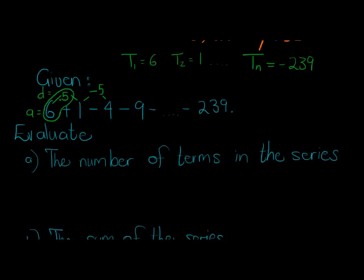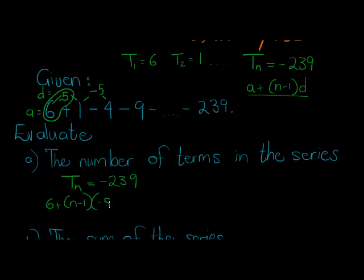But what I do know is the last term. So what I do know is that T_n is equal to negative 239, and T_n is actually—remember, that's a plus n minus 1 times d. Each term is a term in the sequence, in the arithmetic sequence. So each term can be expressed like that, where a is equal to 6, plus n is not known, n minus 1 is not known, but d is equal to negative 5, is equal to negative 239.